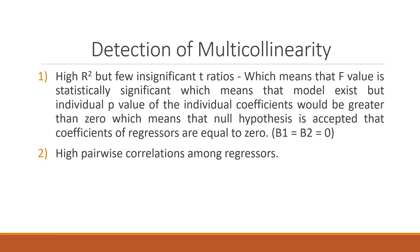In the case of multicollinearity, your F-test will be significant and your R-squared will be very high, but the individual p-values from the t-tests of these variables will be insignificant. Second detection method: high pairwise correlation among regressors.